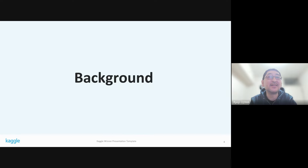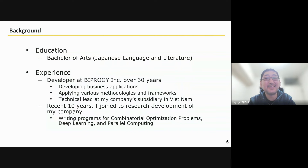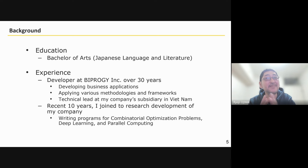First of all, I will talk about myself. I have a Bachelor of Arts in Japanese Literature, not in Computer Science or Mathematics, but I have worked as a developer for 30 years at Vipology. Her first name was Unisys until last year. For the last 10 years, I have been working in research development at my company, writing programs for combinatorial optimization problems, deep learning, and parallel computing.